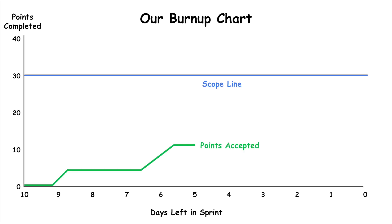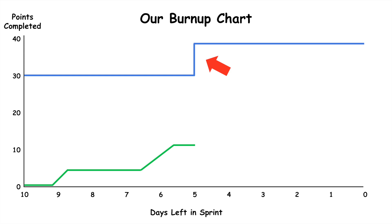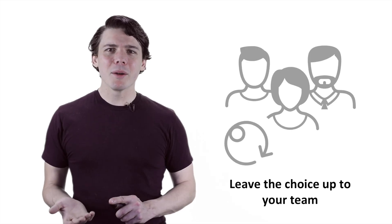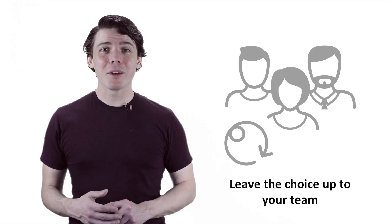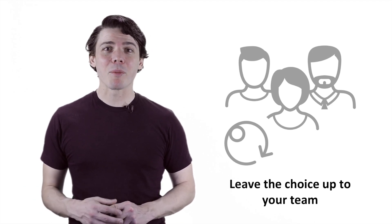A burn-up chart is similar. Rather than burning down to zero story points remaining, we burn up to a scope line. This can be useful on teams where scope changes frequently mid-sprint — a bit of an anti-pattern, but it does make it harder to maintain a pacing line. Since a reasonable argument can be made for either approach, burning down or up is often left to the team's preference.